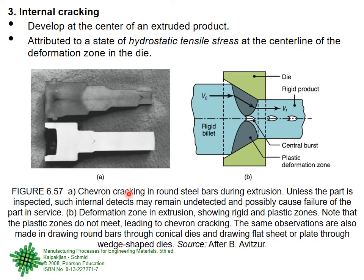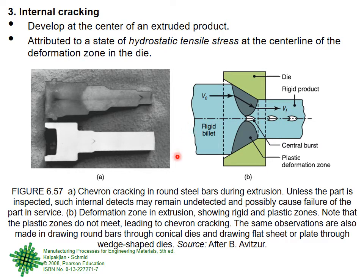This internal cracking or central burst, because of the arrow-like symbol, is also called chevron cracking. If you know the Chevron gas and oil company, their symbol is also this arrow. Unless the part is inspected, such internal defects may remain undetected and possibly cause failure. If there is a surface defect it will be easily seen, but if the defect is in the center of the billet material, unless you have done ultrasound or X-ray, you don't know these defects are there.